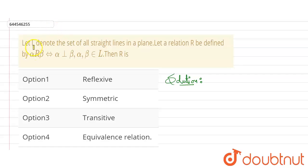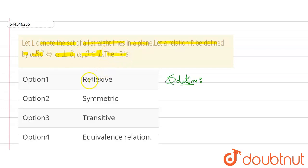Hello everyone. In this question it is given that let L denote the set of all straight lines in a plane, and a relation R be defined by: alpha and beta belong to R if alpha is perpendicular to beta, where alpha and beta belong to L, meaning they belong to the set of straight lines. We need to check whether R is reflexive, symmetric, transitive, or an equivalence relation.